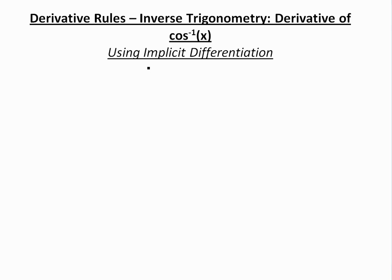Hi, it's time for another Math Easy Solution to discuss some more derivative rules. We'll look at some more inverse trigonometry, and this time we'll do the derivative of inverse cosine using implicit differentiation. I showed in my last video how to do inverse sine, and now we're going to do a similar proof for this one.